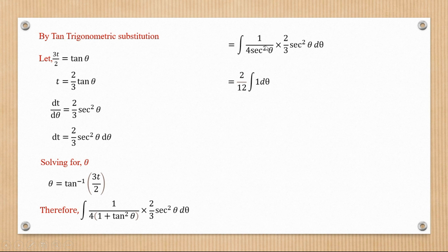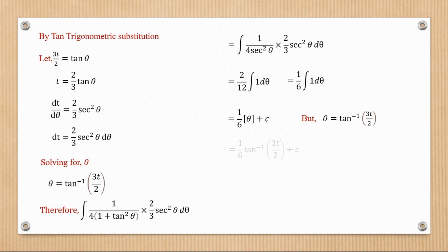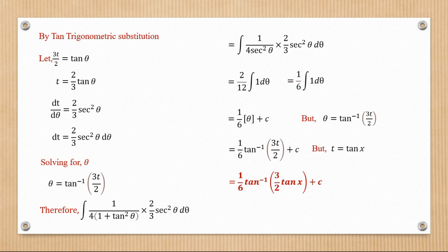We can see that values cancel. Multiplying through, 2 over 12 is pulled out of the integral. The sec squared terms cancel, leaving 1. Since 2 over 12 simplifies to 1 over 6, we have 1 over 6 times the integral of 1 dθ. Integrating gives 1 over 6 theta plus c. Since theta equals tan inverse of 3t over 2, and t equals tan x, the final answer is 1 over 6 tan inverse of 3 over 2 tan x plus c.